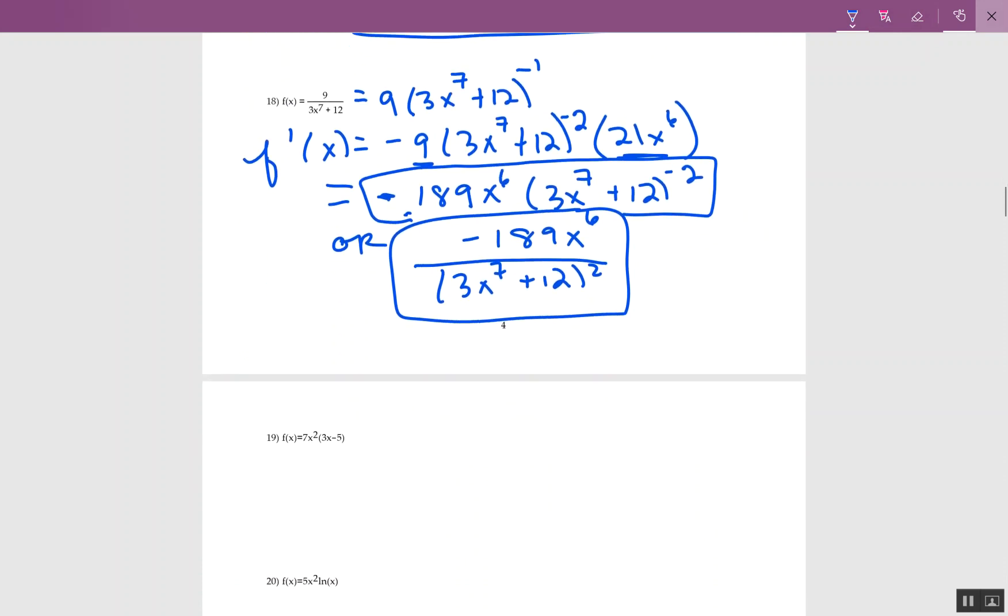So we've done the quotient rule. We've done the chain rule. We need to do the product rule. So it's product because even when you say it, you should be reading this as 7x squared times 3x minus 5. And then there's that choice of, well, you could do the product rule, but I'm actually not going to, even though I told you the product rule would be coming.